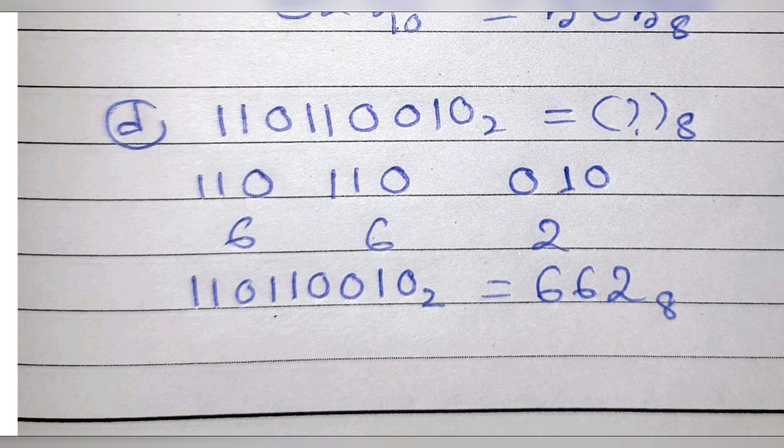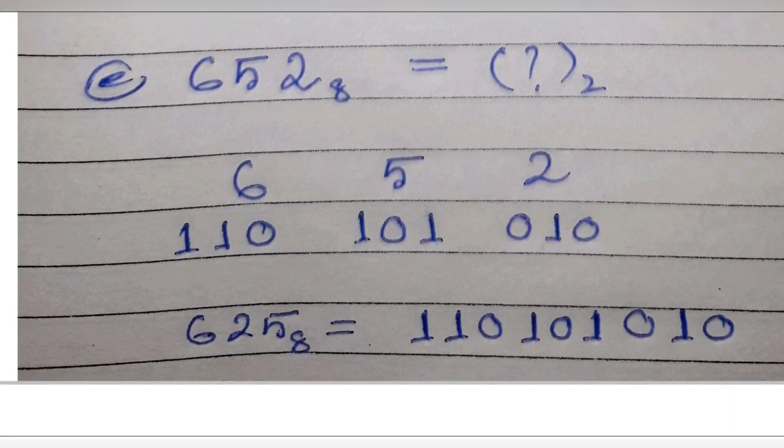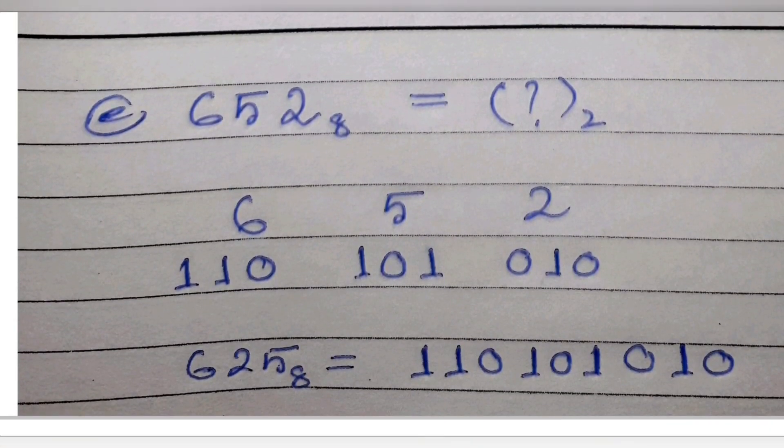Number E, we have to convert this number from octal to binary. We'll separate the digits and each digit will be divided by 2 and we'll write the binary equivalent.